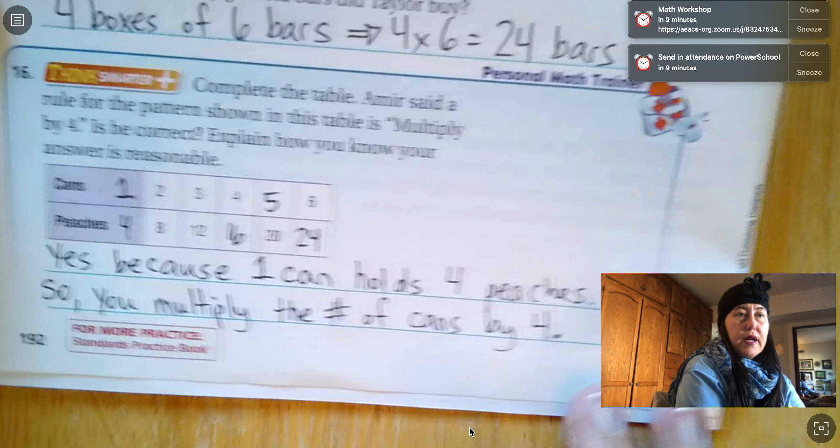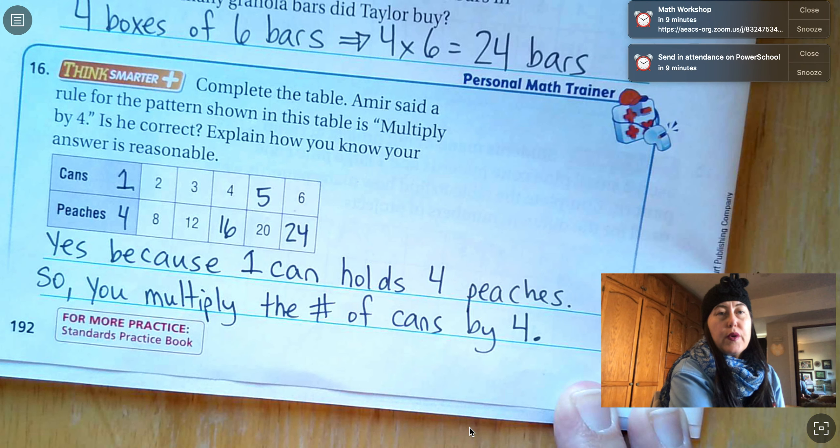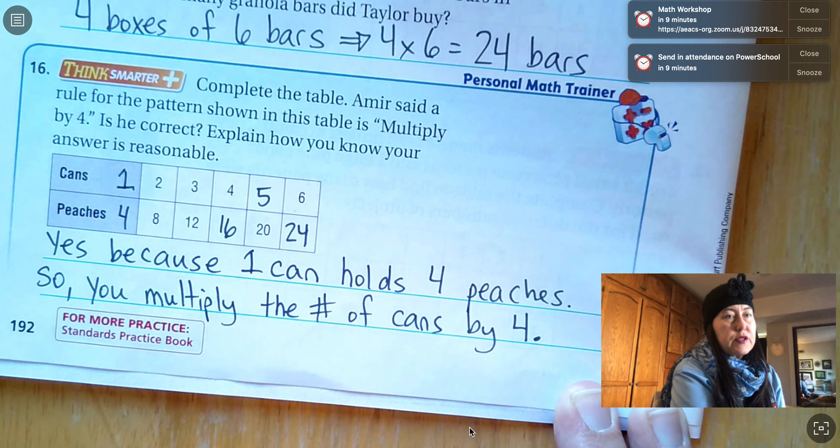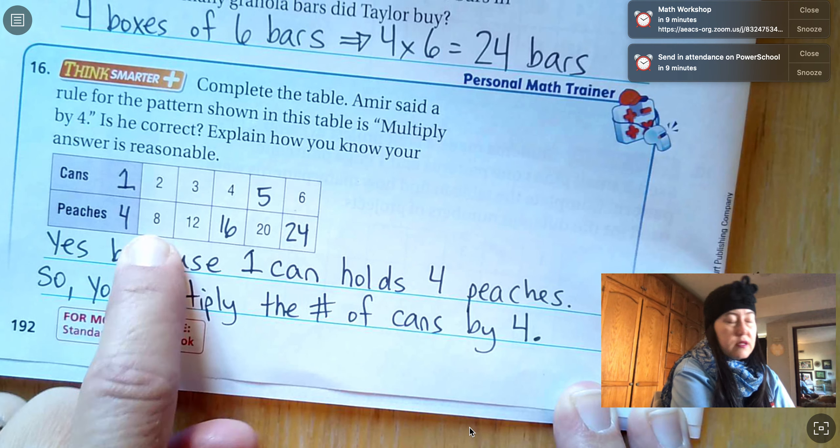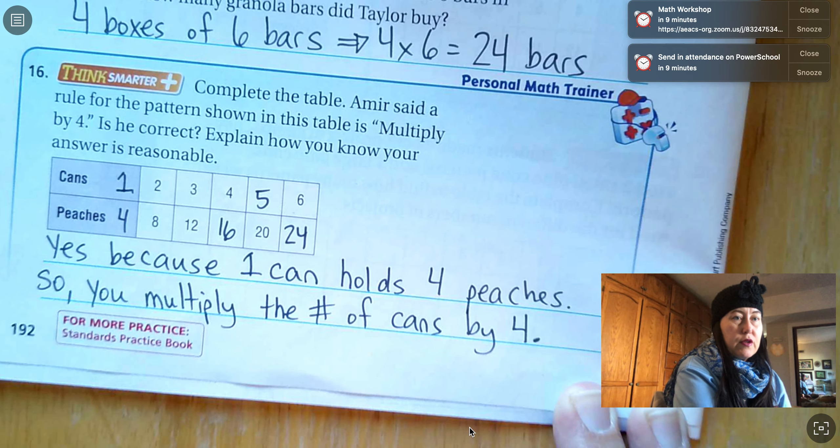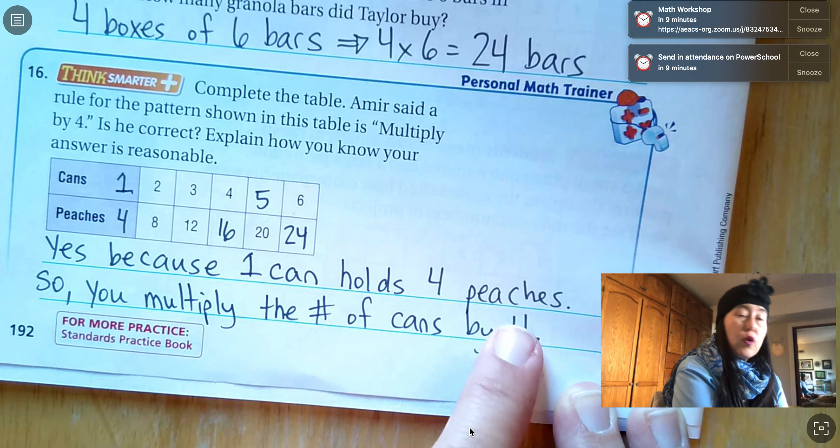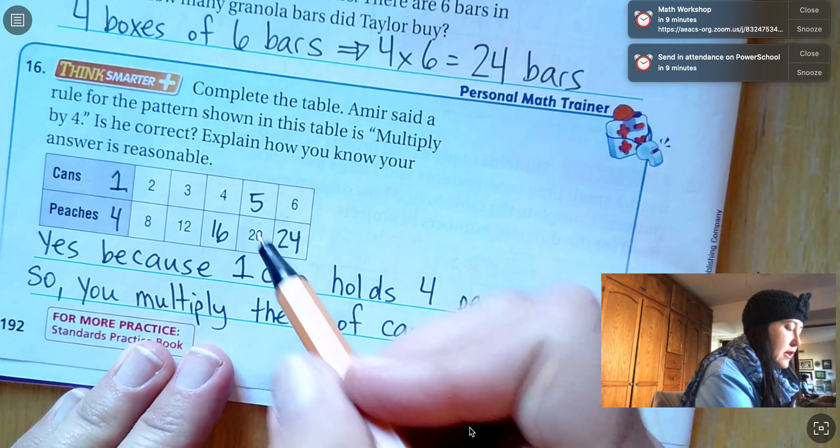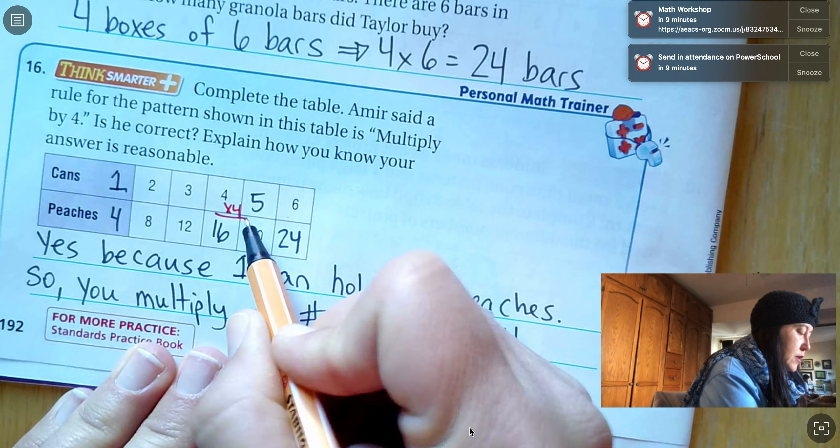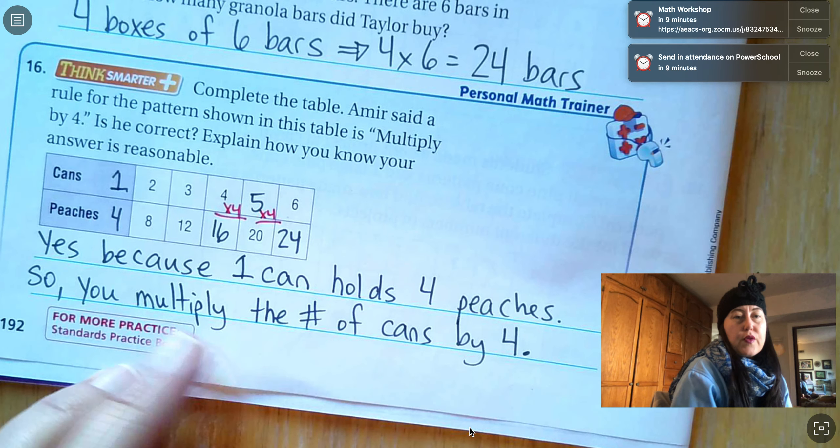Last one. Think smarter. Complete the table. Amir said a rule for the pattern shown in this table is multiply by four. Is he correct? Explain how you know your answer is reasonable. Now they started off saying two cans maybe will contain eight peaches. I like to half it and see how much the one unit is. So he's saying that you would multiply by four. And yes, he is correct because one can holds four peaches. So you multiply the number of cans by four. And I can see that's easy. I know my four times four equals sixteen. I know five times four equals twenty. So that works.